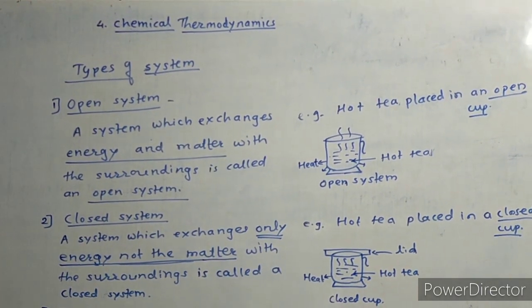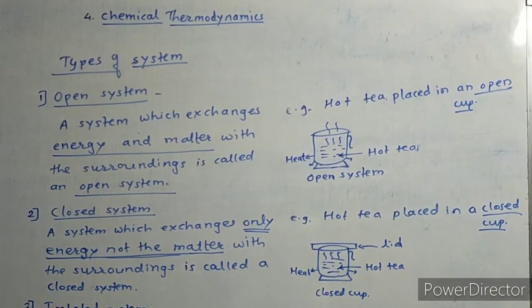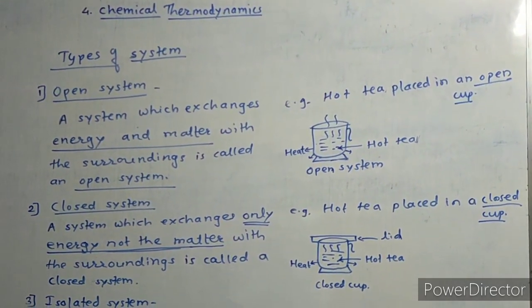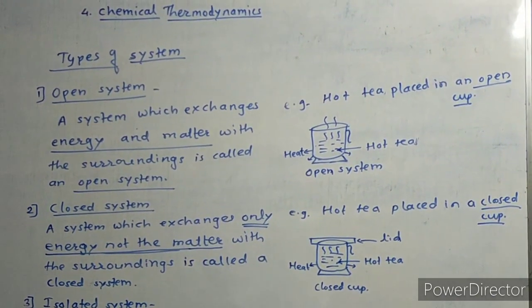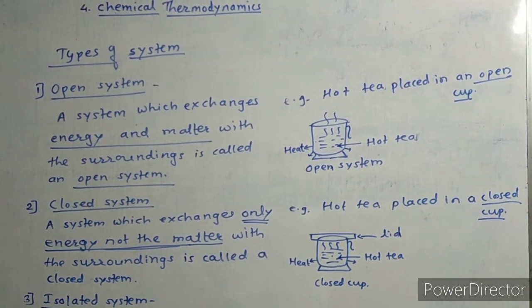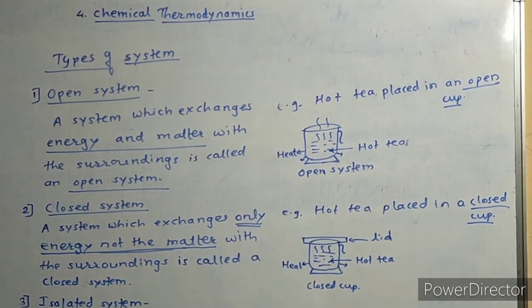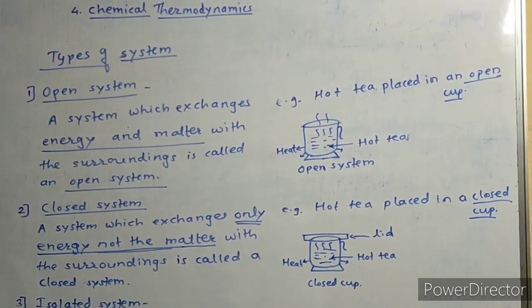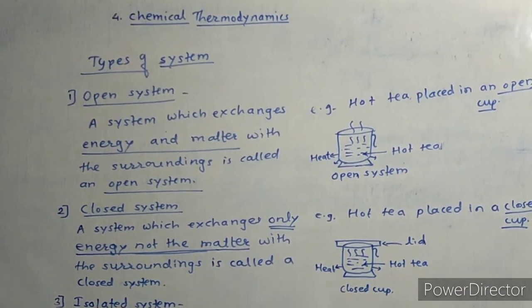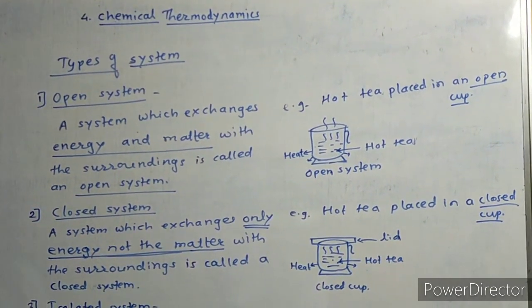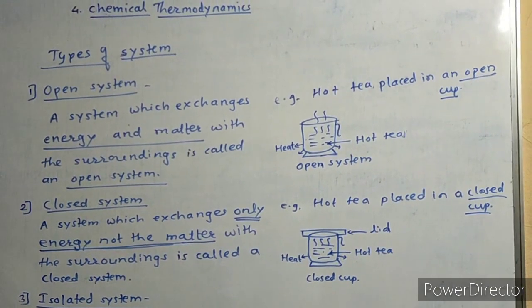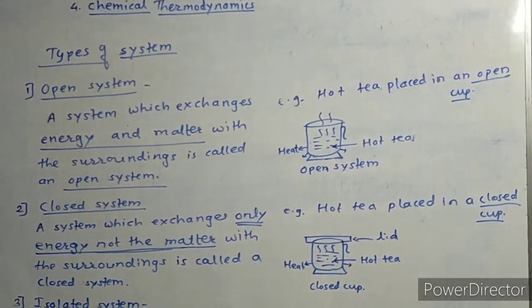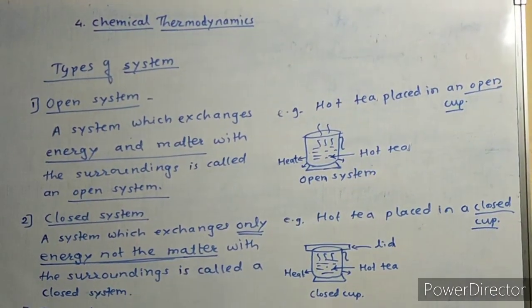The first type is the open system. A system which exchanges both energy and matter with the surroundings is called an open system. For example, hot tea placed in an open cup — heat energy goes out from the tea, and water vapour also exchanges with the surroundings. Both energy and matter are exchanged, so it is an open system.